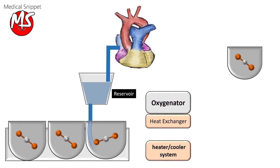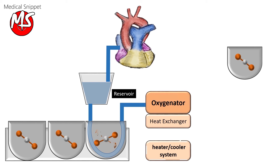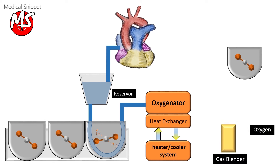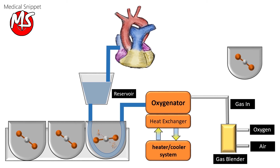From the reservoir, the blood is pumped into the oxygenator by the systemic blood pump. The temperature of the blood can be increased or decreased with the help of a heat exchanger, which is an integral part of the membrane oxygenator. With the help of a gas blender, oxygen and air can be mixed to control the partial pressure of oxygen in the blood. The gas flow, that is the sweep rate, can be adjusted independently to remove carbon dioxide.